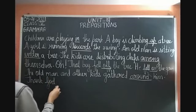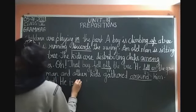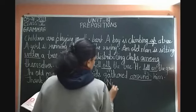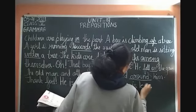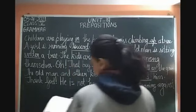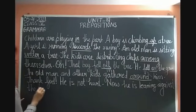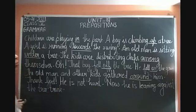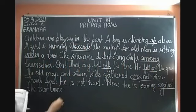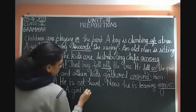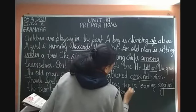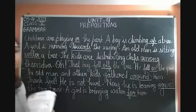Thank God, he is not hurt. He is leaning against the tree trunk. 'Leaning' is the verb, but the word that tells us the position of the boy is 'against,' so 'against' is the preposition. And a girl is bringing water for him — 'for' is again the preposition in this last line.